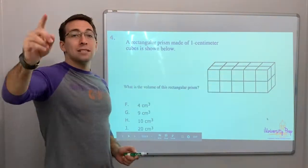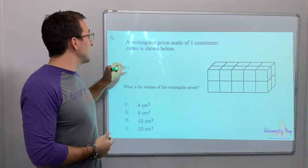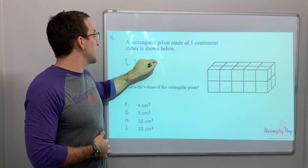A rectangular prism is made of one centimeter cubes. Show them below. What is the volume of the rectangular prism? Volume is length times width times height.